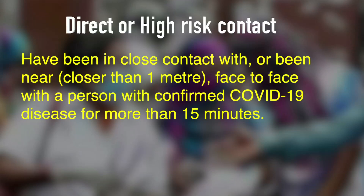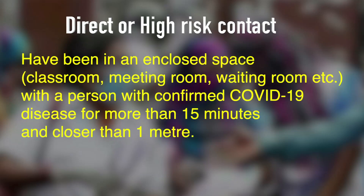Those who have been in close contact face to face — less than one meter for more than 15 minutes — are also high risk. Those who were in an enclosed space like a classroom, meeting room, or waiting room with a confirmed COVID case for more than 15 minutes at a distance of less than one meter are also considered high risk.